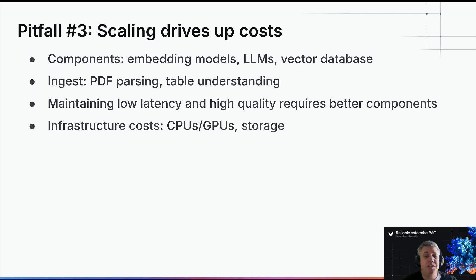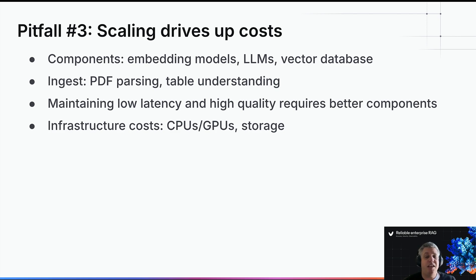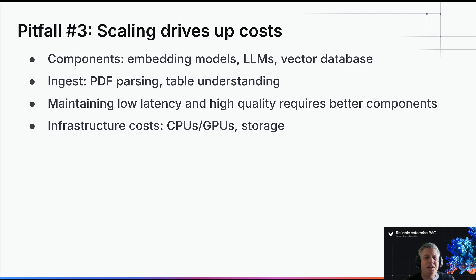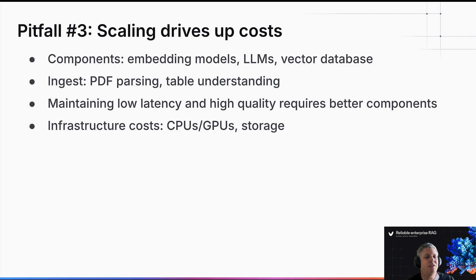Pitfall number three is scaling and cost. You have a lot of components: embedding models, LLMs, a vector database, and sometimes external services for PDF parsing or table understanding. Maintaining low latency and high quality just requires good components. On top of that, you have the cost of GPUs, CPUs, and storage. All of these things really ramp up when you go to production scale — not just 10 documents, but thousands, hundreds of thousands, or millions of documents. Token costs also start becoming hard to maintain.